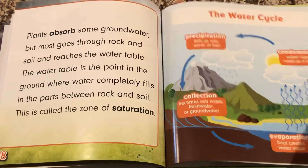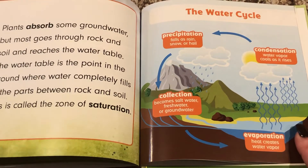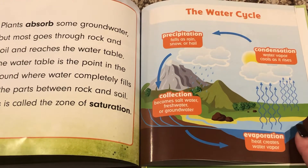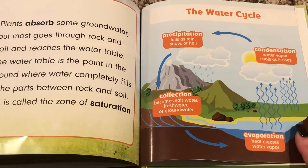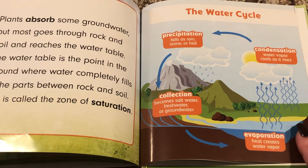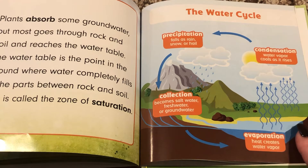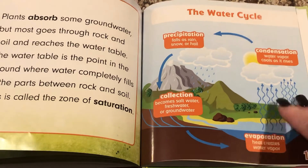Here is the water cycle: Precipitation falls as rain, snow, or hail. Collection becomes salt water, fresh water, or groundwater. Evaporation — heat creates water vapor. Condensation — water vapor cools as it rises.